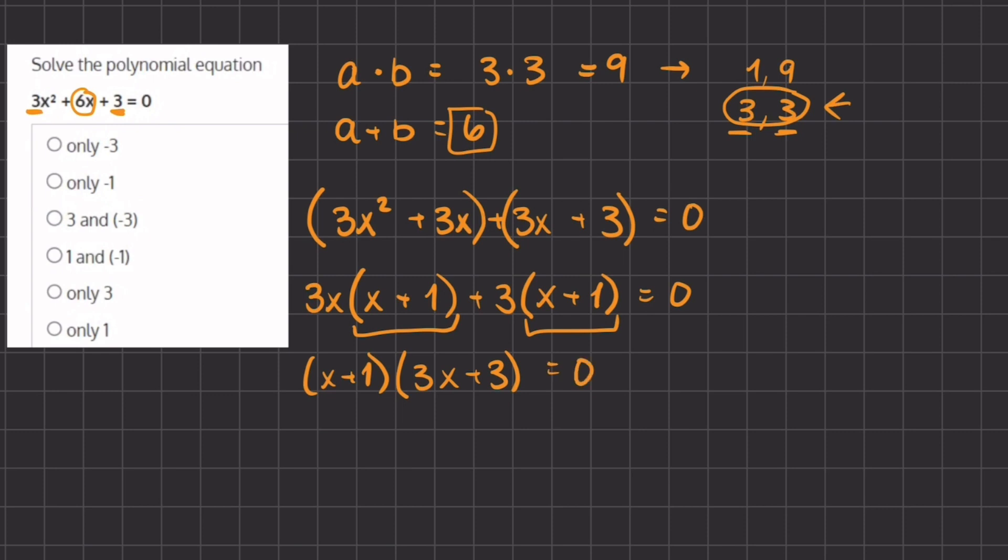Now in order to solve for the value of x, we are going to set both of them equal to 0. So we have x plus 1 equals 0, and when we subtract 1 on both sides we have x equals negative 1.